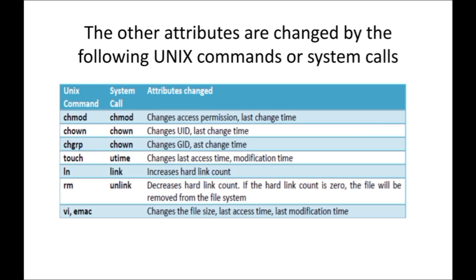The TOUCH command — system call UTIME — is used to change the last access time and last modification time. The LN command — system call LINK — is used to increase the hard link count. Hard link means if you want to add extra paths to the same file, you can do that using the LN command. The same file can have different paths — one file can have 10 paths, stored in different locations.